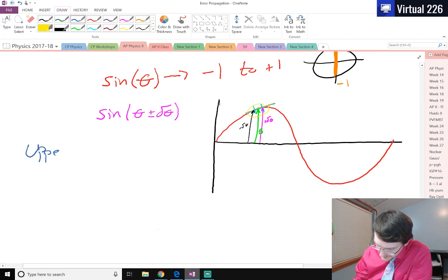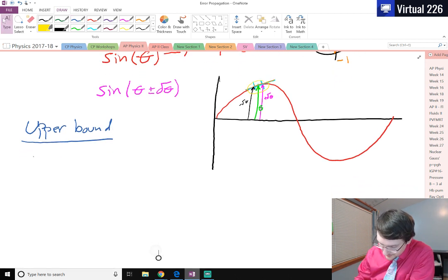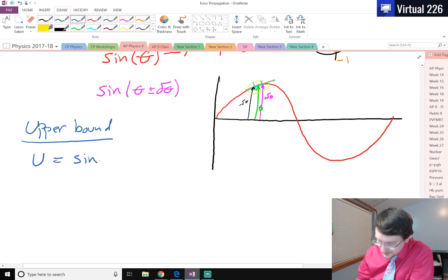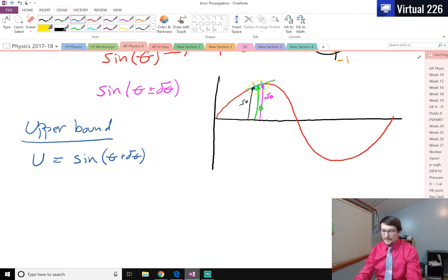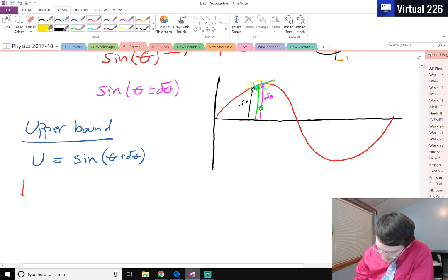So to find the upper bound, what we're going to do is, we're just going to call this upper bound u, and we're going to pass into the function. In our case, we're looking at sine. We're just going to pass it theta plus del theta, whatever that value is. We're going to get a value for the upper out of that.